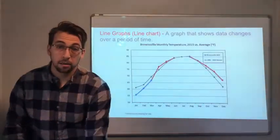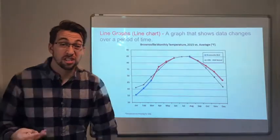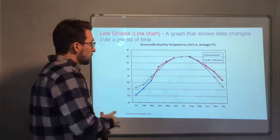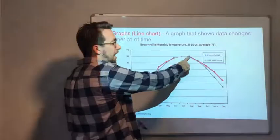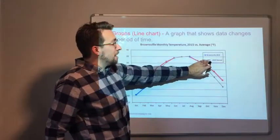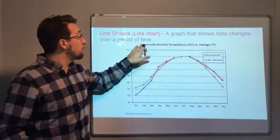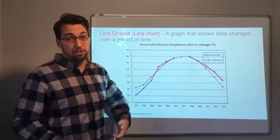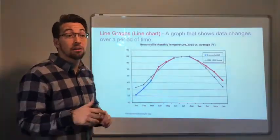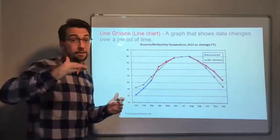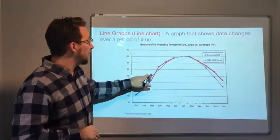And then one more look at another line graph. This is a double line graph. So our black line is 1981 to 2010 normal. So that's our average, right? And this is Brownsville monthly temperatures, right? So Brownsville near the border of Texas and Mexico. So here's our average,